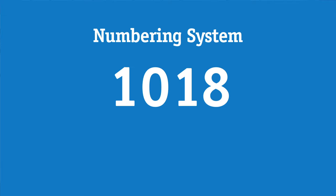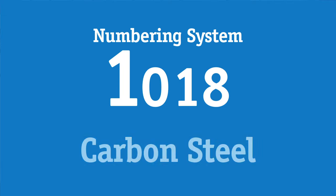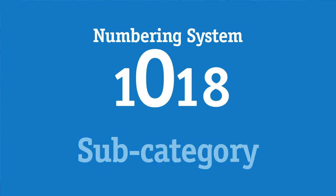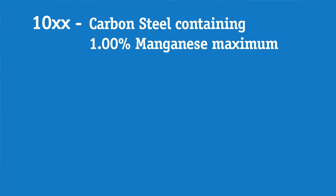If the first digit is a 1, that indicates carbon steel. The next digit indicates the subcategory based on particular underlying properties. For example, the 10 series indicates plain carbon steel containing 1% manganese maximum.